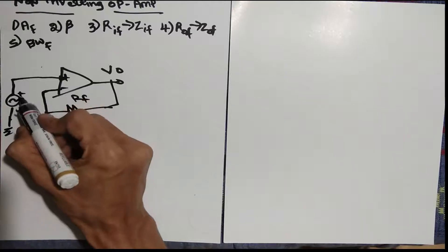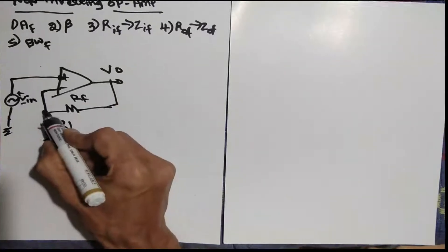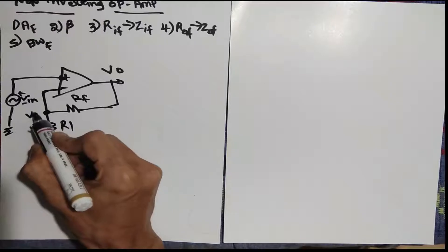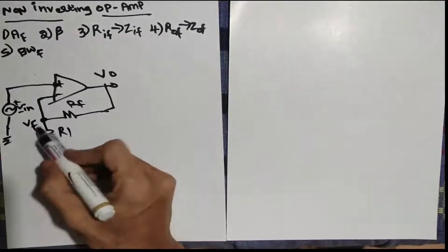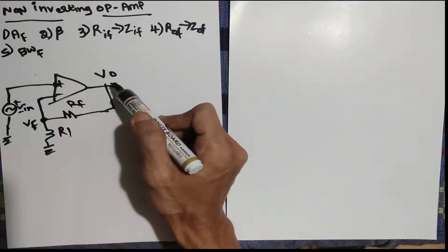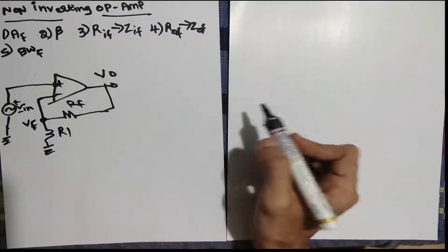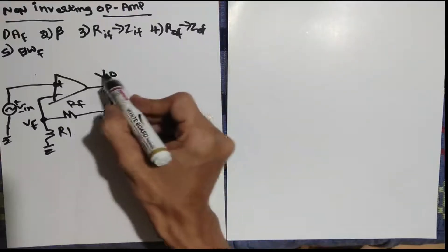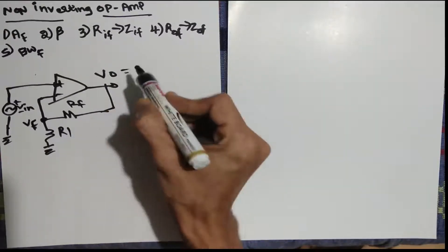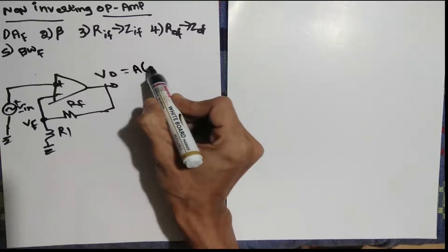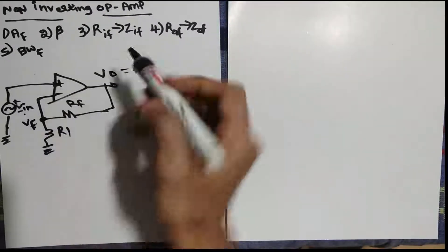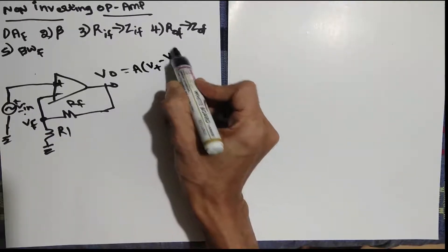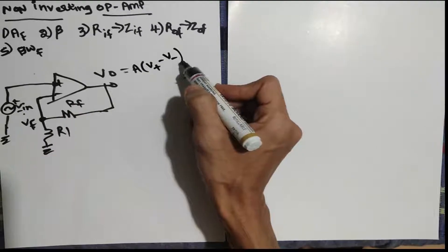Here we refer to the input as VIN. Whatever signal we are getting at the feedback portion we can call VF, because this is the feedback portion. So we are working with VIN and VF, taking the output with respect to VIN. We know the gain formula: V0 is equal to A into V-plus minus V-minus, where V-plus is the positive terminal voltage and V-minus is the negative terminal voltage.